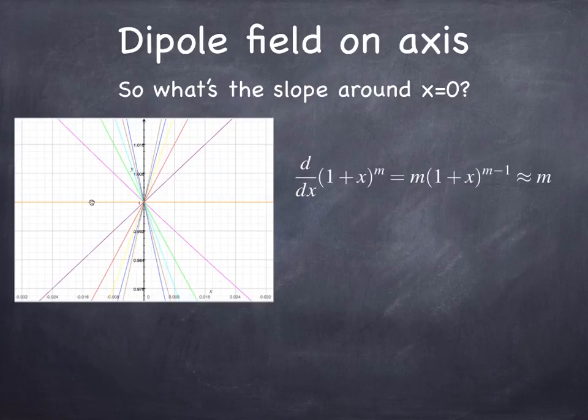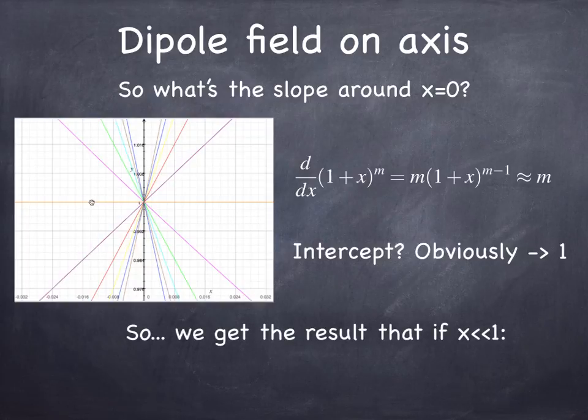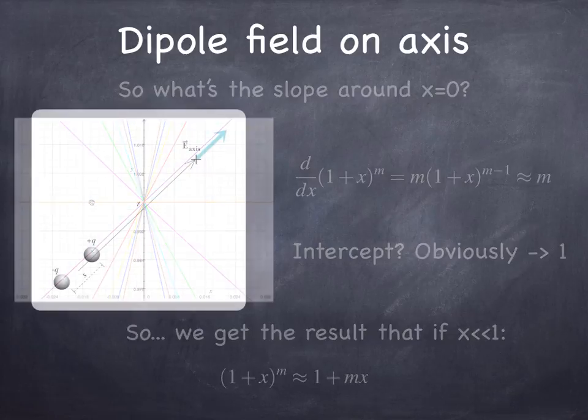They all pass through 1, so we know the intercept is 1 for all of them. But what about the slope? And so what you do is you take the derivative of the function near x equals 0 and look at the slope of the function at that point. And you'll notice that the slope is just equal to m. When x is equal to 0, the slope is equal to m. The intercept, as we noticed a minute ago, is always 1. And so if x is much, much less than 1, we get the very simple result that 1 plus x to the power m is simply 1 plus m times x. Very easy.